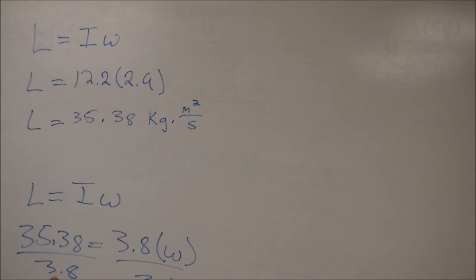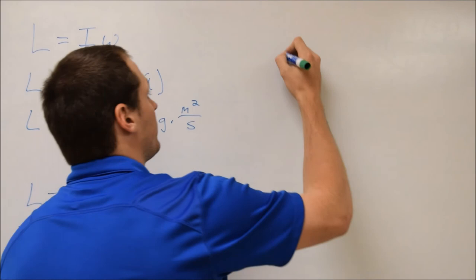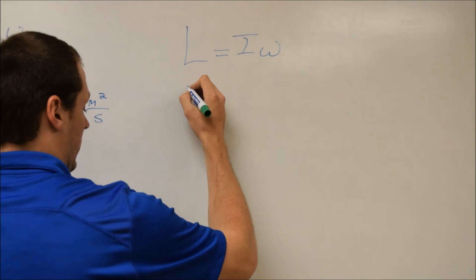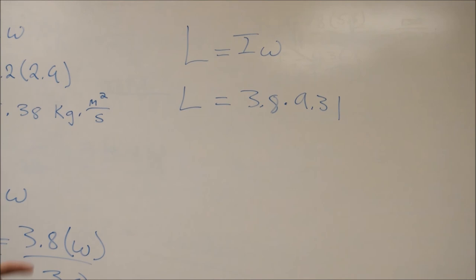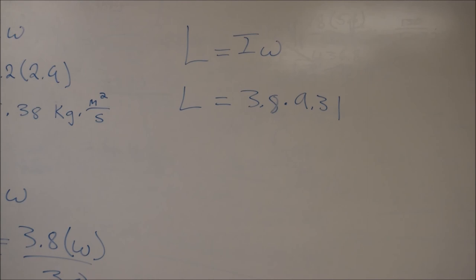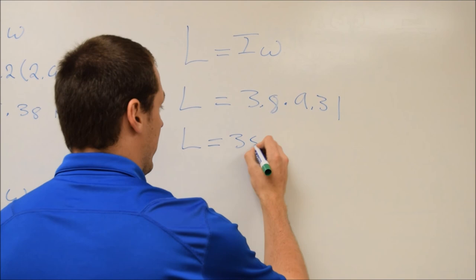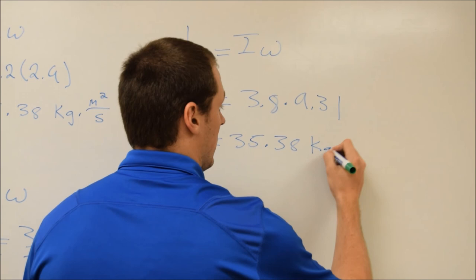So we have this guy again, and then so we just put in our numbers. This time we have 3.8 multiplied by 9.31, which we got from doing our problem earlier with the updated information after we solved for the first bit given to us in the problem. So then when we do the math here, we end up with the same thing of 35.38 with the same units that are kilograms times meters squared per second.